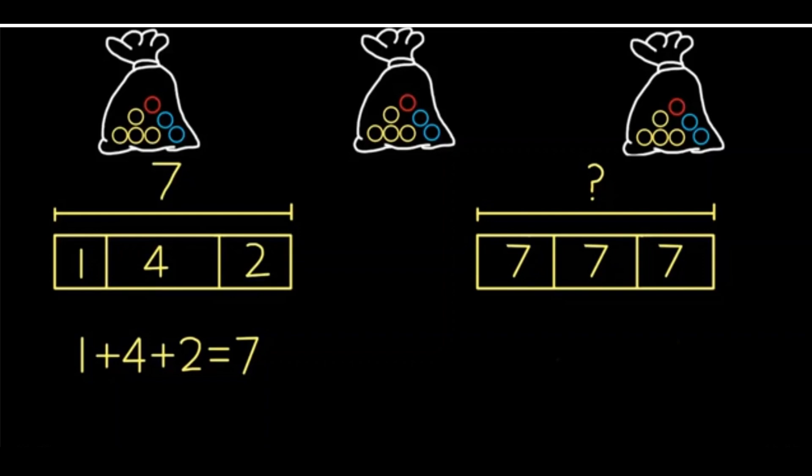This bar diagram shows three groups of seven marbles. Three times seven equals 21 marbles altogether.